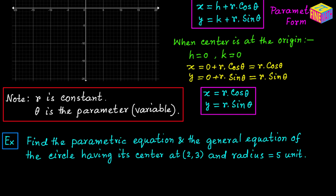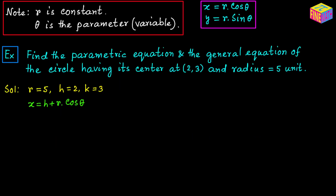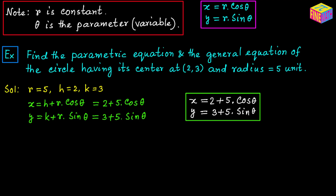Creating the equation is extremely easy. We have R which is 5, H is equal to 2, K is equal to 3. From the parametric form, x is equal to H plus R times cosine of theta, and if we plug in the values we get x is equal to 2 plus 5 times cosine of theta. Similarly, y is equal to K plus R times sine of theta, and if we plug in the values we get y is equal to 3 plus 5 times sine of theta. This is the set of parametric equations of this circle.